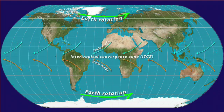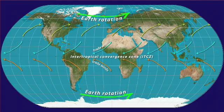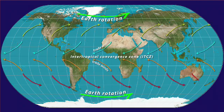In the mid-latitudes, the Ferrell cells interact with the earth's rotation to produce surface winds opposite in direction to the trade winds. In the northern hemisphere, these are oriented southwest to northeast, and in the southern hemisphere from northwest to southeast.